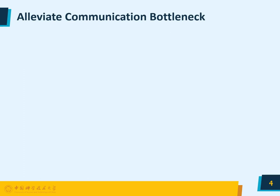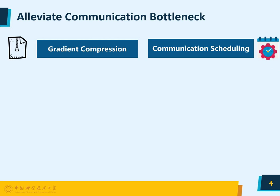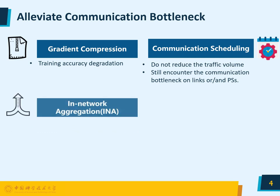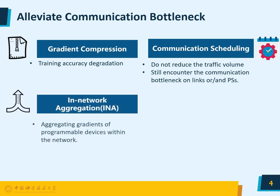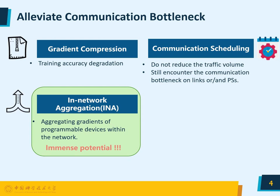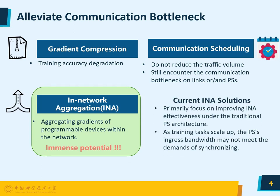To alleviate the communication bottleneck, previous works usually focus on gradient compression or communication scheduling. Regrettably, gradient compression will inevitably lead to training accuracy degradation, and communication scheduling does not reduce the traffic volume and may still encounter the communication bottleneck on links or parameter servers. Fortunately, the emergence of programmable network hardware has paved the way for an innovative solution known as in-network aggregation, which holds immense potential in resolving communication bottlenecks by enabling programmable devices within the network to aggregate gradients. However, current in-network aggregation solutions primarily focus on improving efficiency under the traditional parameter server architecture and do not fully address the communication bottleneck caused by limited PS ingress bandwidth.